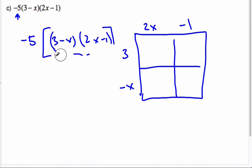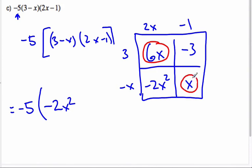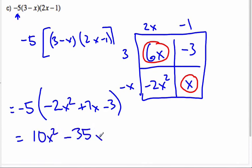Let's start to multiply. I'll fill in the blanks: 6x, negative 3, negative 2x squared, and negative x times negative 1 is positive x. So we still have the negative 5 on the outside. Writing it out: negative 2x squared, and the like terms 6x and x combine to give positive 7x, and then negative 3 remains. Now distributing: negative 5 times negative 2x² gives 10x², negative 5 times 7x gives negative 35x, and negative 5 times negative 3 gives plus 15.